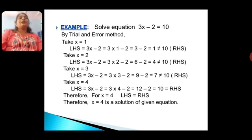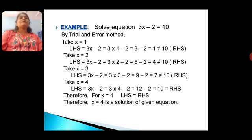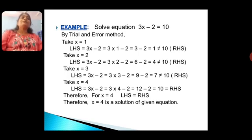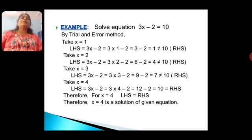Again, for x = 3: LHS = 3x − 2 = 3 × 3 − 2 = 9 − 2 = 7, which is not equal to 10 (RHS). We take another value, x = 4: LHS = 3x − 2 = 3 × 4 − 2 = 12 − 2 = 10, which equals 10 (RHS). So for x = 4, LHS equals RHS, therefore x = 4 is the solution of the given equation.